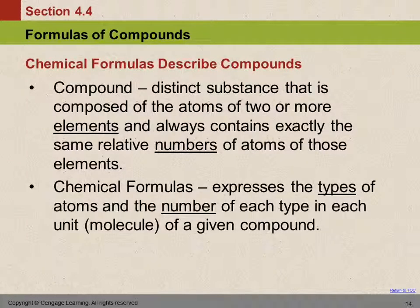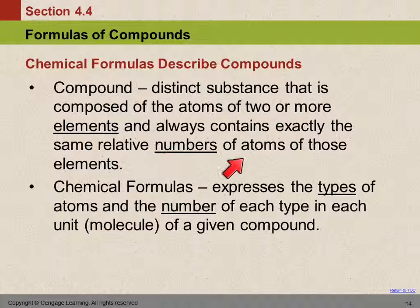Let's talk about formulas for compounds. A compound is a substance composed of two or more elements, and it's always the same relative numbers of atoms. A chemical formula is a shorthand that tells us which types of atoms are in the compound and the numbers of each of those types of atoms.